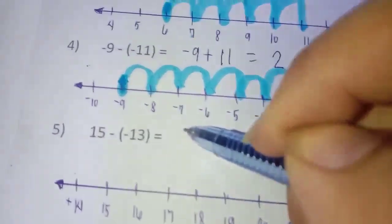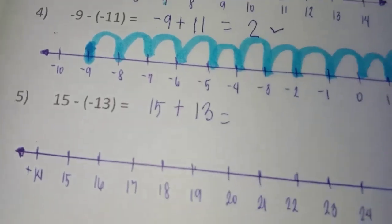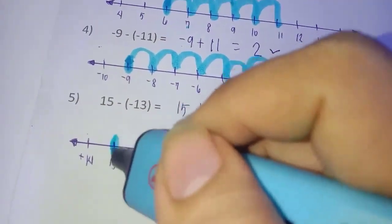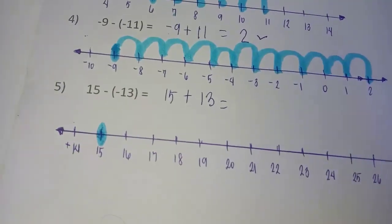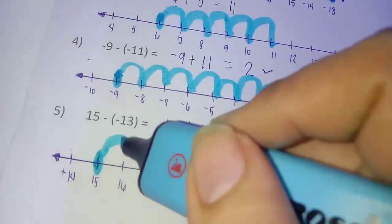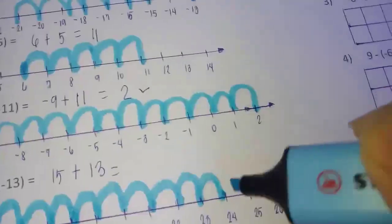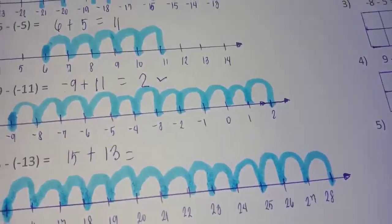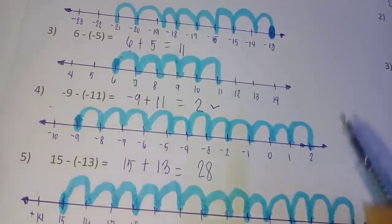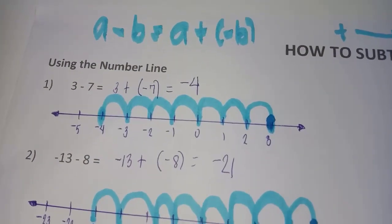Example 5: fifteen minus negative thirteen, which is the same as fifteen plus thirteen. Locate fifteen on the number line. Since thirteen is positive, we move thirteen units to the right: one through thirteen — and the final answer is 28. So fifteen minus negative thirteen equals fifteen plus thirteen, which equals 28. That is how you use the number line to subtract integers.